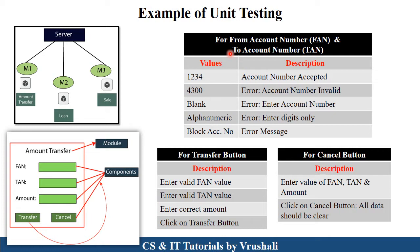For the 'from account number' and 'to account number' fields, the user needs to enter a valid account number only. Suppose they enter 1234 — the message 'account number accepted' will appear. Suppose they enter 4300 and this is an invalid account number — they will get a particular error. Suppose the user clicks directly on the transfer button without entering anything — it will show the error 'enter account number'. Sometimes a user enters an alphanumeric value like ABCD, but account numbers are always in digit format, so it will show the error 'enter digits only'. These are the test cases generated to test whether a particular module is working properly or not.